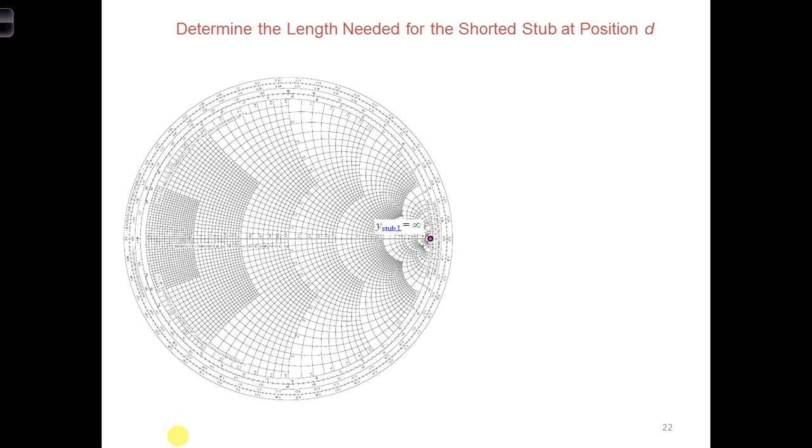Then, to see what length L will work, we would need to find a distance from the load at which the admittance equals what we want. So we want Y in for the stub to equal minus J1.58 in order to cancel the positive J1.58.